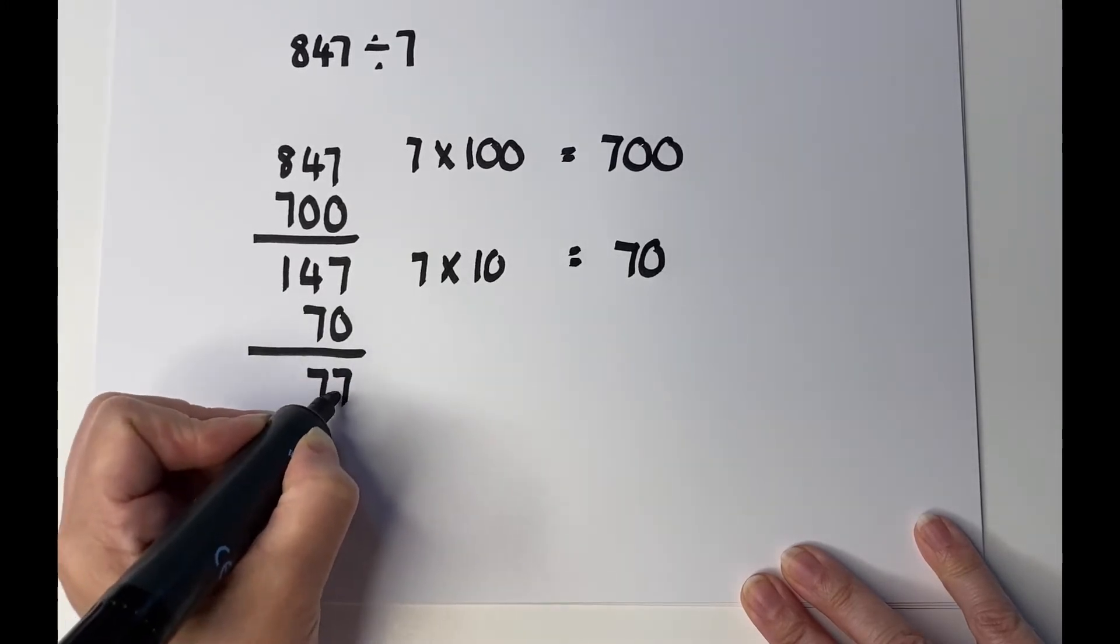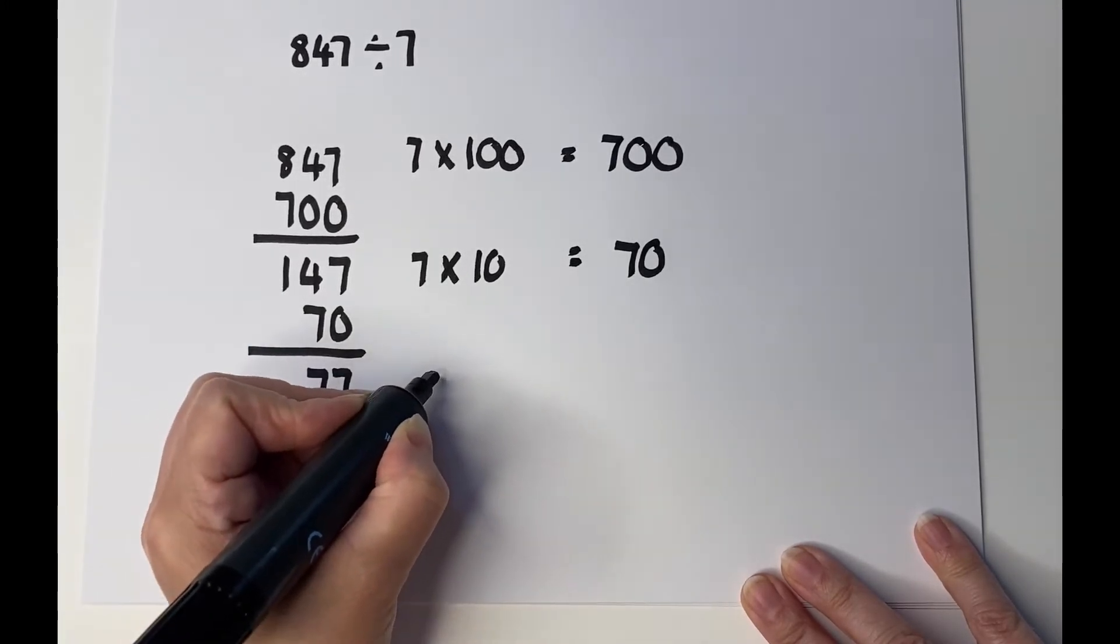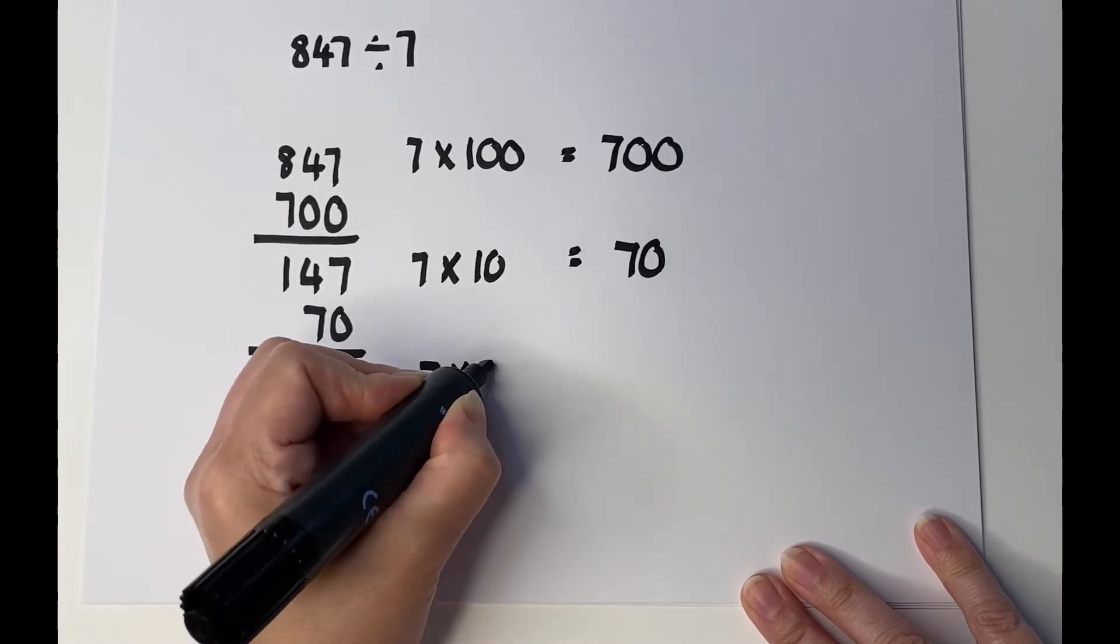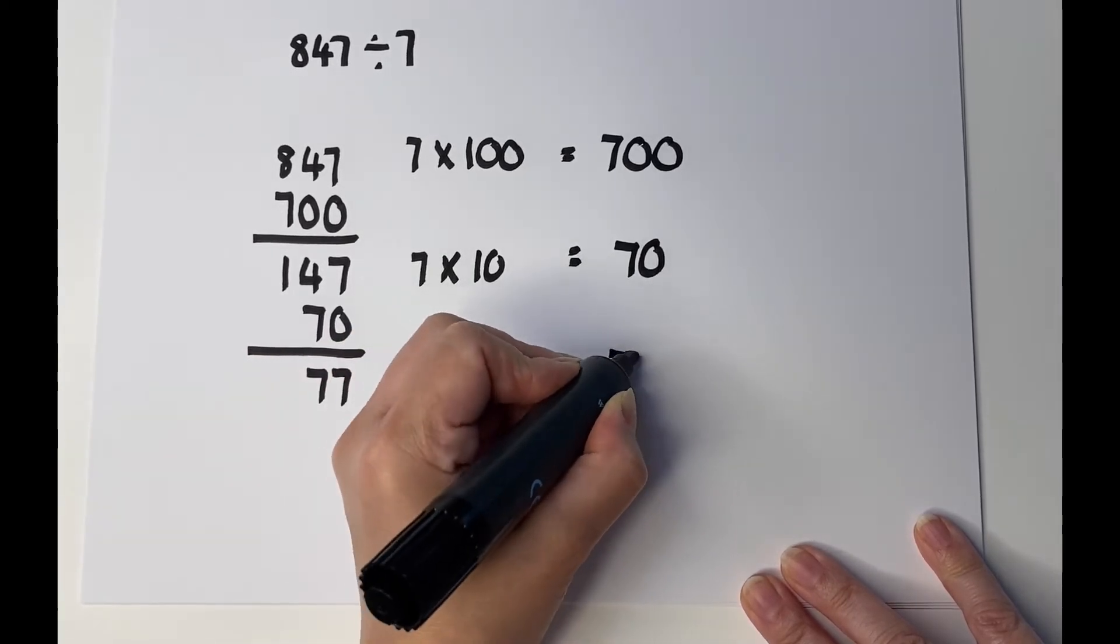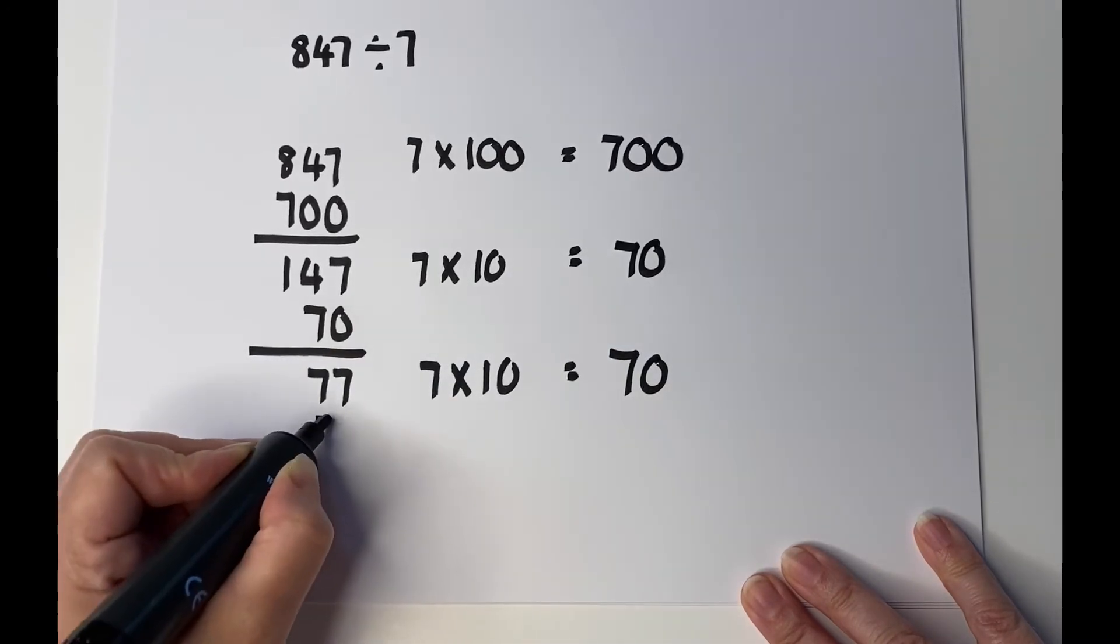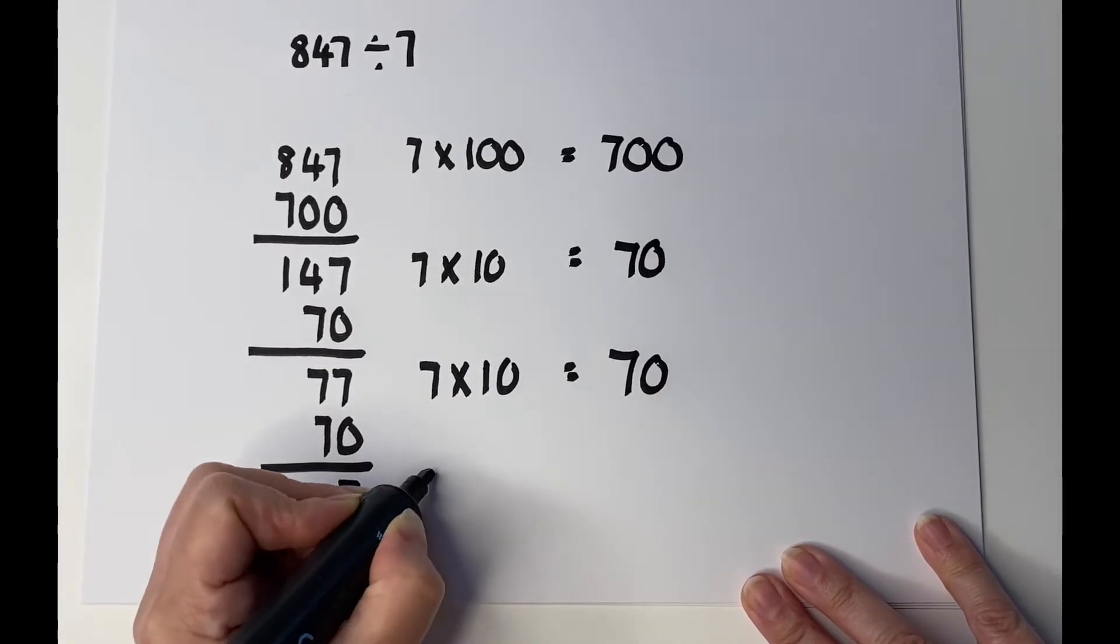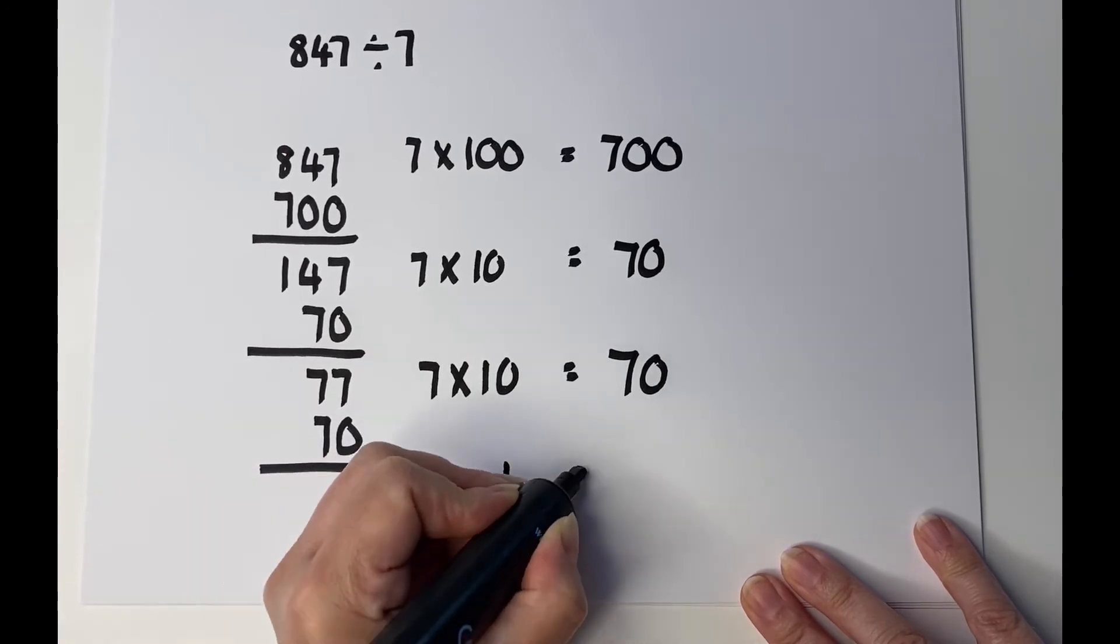Now we can take another group of 7 tens away, so we're going to take that away again. 7 times 10 equals 70. I'm going to take that 70 away, which leaves us with 7, and 7 times 1 equals 7.